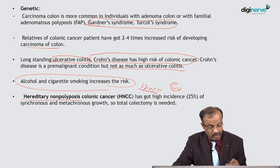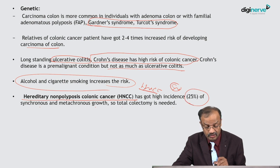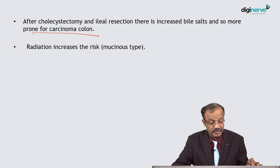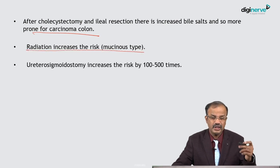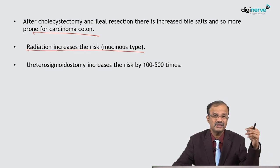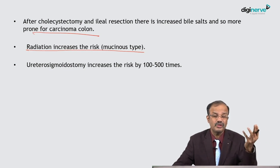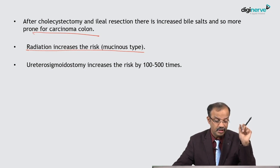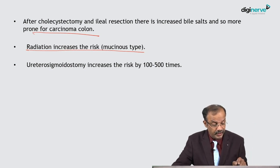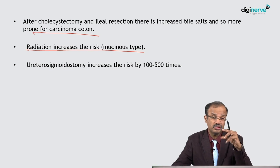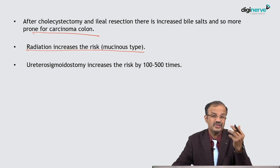In HNPCC, the chance of metachronous incidence is 25 percent — an MCQ question. After colectomy and ileal resection there is increased bile salt exposure, increasing risk for carcinoma colon. Radiation given for other conditions like lymphoma or spinal disease alters mucosal DNA and causes a high chance of turning into carcinoma over time.